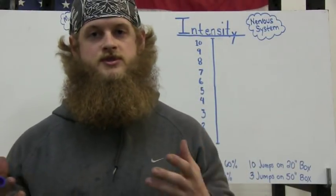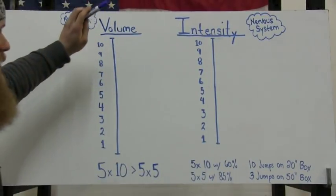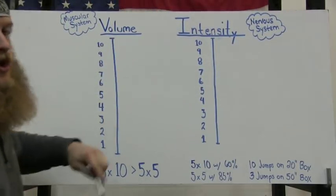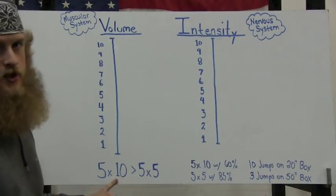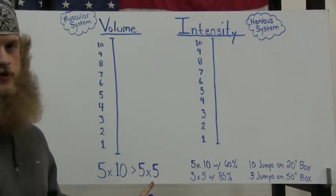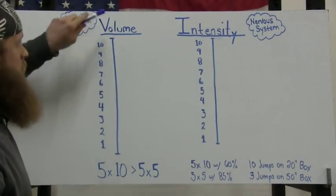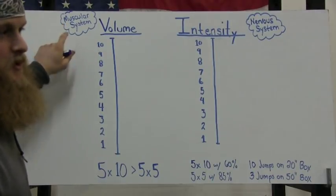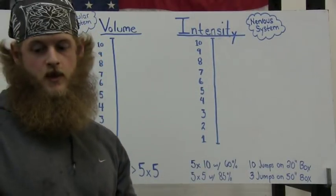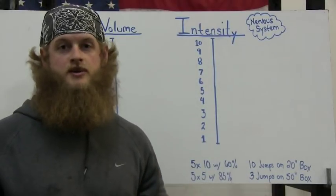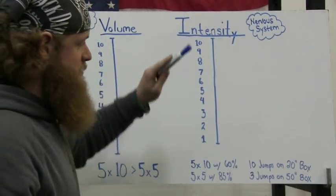In order to figure out why we use certain set and rep ranges, we need to define two terms. The first one is volume, the second one is intensity. Volume is simply the amount of reps being done — if you did five sets of ten, that's 50 total reps; five sets of five is only 25 total reps. When we talk about volume, we're talking about stimulating the muscular system — this is more of a bodybuilding term. We are inducing muscle hypertrophy, trying to increase muscle size, going for the pump.